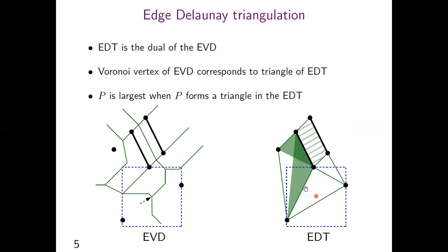The H-Delaunay triangulation is the dual of the EVD. From now on, I will abbreviate H-Delaunay triangulation to EDT. A Voronoi vertex of EVD corresponds to a triangle of EDT. So, P is largest when P forms a triangle in the EDT of Q.